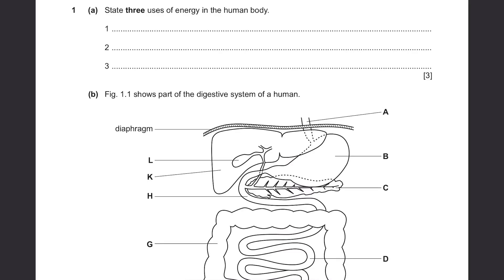This question was also in Paper 41 and 42, which shows how important it is. There are many possible answers: protein synthesis, growth, movement, sensitivity, cell division, active transport, nerve impulses, and so on.